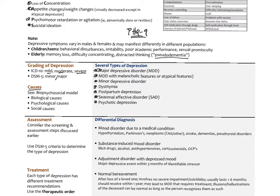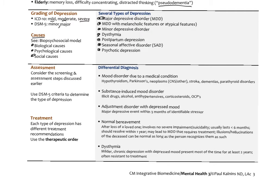In terms of causes of depression, the biopsychosocial model applies. Biological causes include problems in the organ systems, gut health, and vagus nerve communication between the gut and the brain, as well as stress hormones. There are also psychological and social causes. For assessment, if patients present with depressive symptoms we use DSM-5 diagnostic criteria and a screening tool like the PHQ-9.